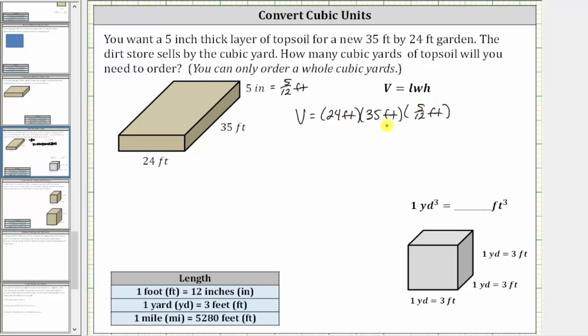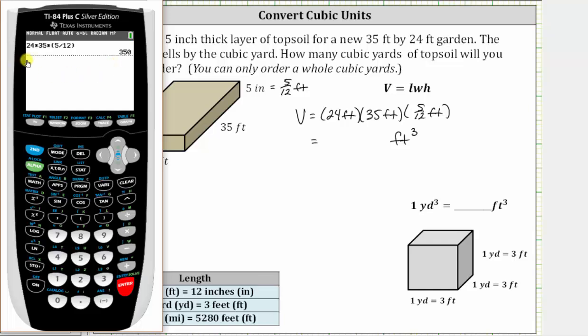Notice how we have feet times feet times feet, which gives us the volume in cubic feet. Now we need to determine 24 times 35 times five twelfths, which is equal to 350. We can check this on the calculator if needed. Notice how the product is 350, giving us a volume of 350 cubic feet.